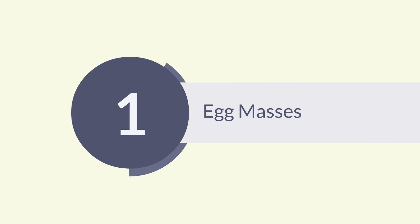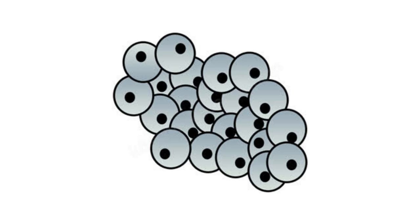Egg masses: the first stage is the egg stage. Eggs are usually laid in or near water. A frog can lay thousands of eggs at once. The eggs are laid in large groups and are covered in jelly, which makes them slippery. The jelly protects them from other animals eating the eggs.